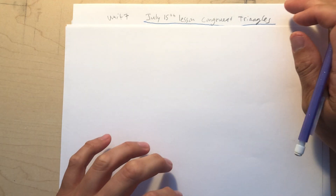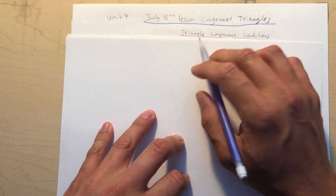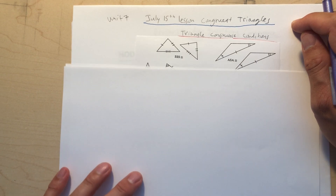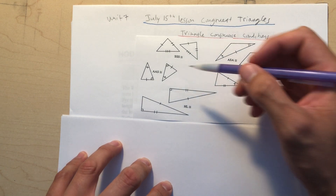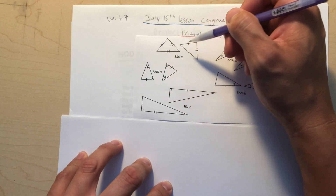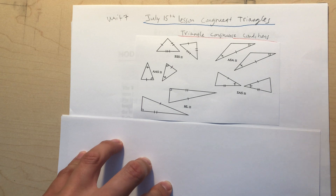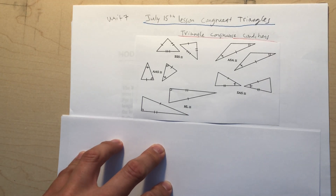First, let's talk about some definitions you should know: triangle congruence conditions. These are things you already learned. Congruence is sort of like cloning — if someone cloned you exactly, you'd be congruent to your clone. But you can never judge congruence by appearance alone; you always want to use these conditions.